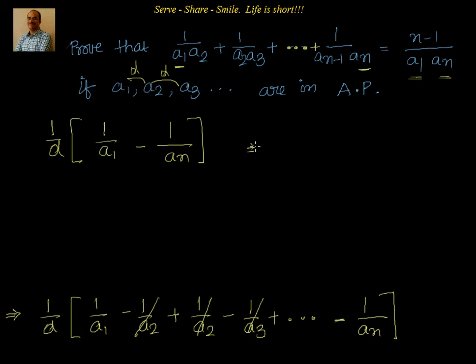Now, we will take LCM because we see that we have a1, an. So, it will be 1 by d multiplied with LCM. If I take, I will have an minus a1. That is equal to 1 by d into an minus a1 by a1an.